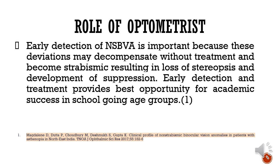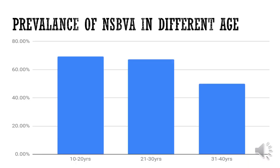A study by Madeline D and Dutta P examined patients with asthenopic symptoms using a complete orthoptic examination. They found the prevalence of non-strabismic binocular vision anomaly was around 50% in the 31-40 age group, approximately 62-63% in the 21-30 age group, and as high as 70% in the 10-20 age group. So every seven out of ten children coming to your clinic with asthenopic symptoms may have a non-strabismic binocular vision anomaly.